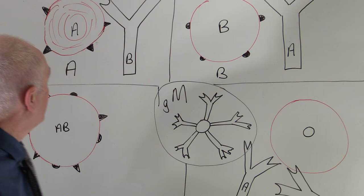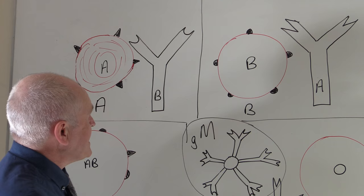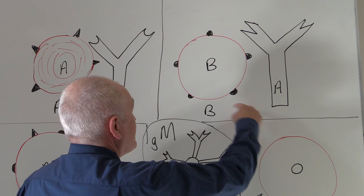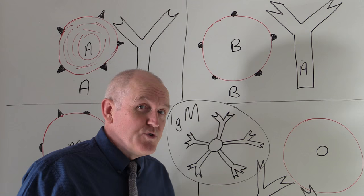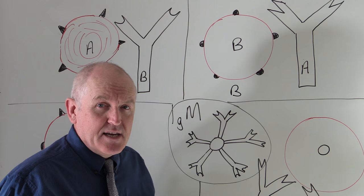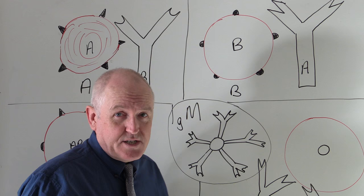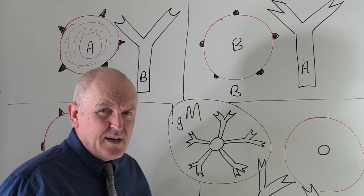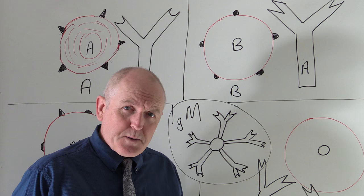Blood group A has anti-B antibodies because there are no B antigens, and blood group B has anti-A antibodies because there are no A antigens. For some reason, you develop antibodies to any of the ABO antigens you don't have, and these are naturally occurring. Whoever you look at with blood group A, they are going to have anti-B antibodies in their plasma. These develop during the first few months to the first year of life, probably because neonates are exposed to bacterial infections and different sorts of food that stimulate their development.